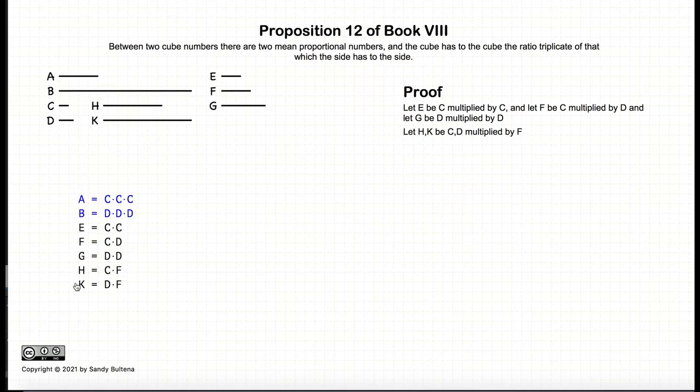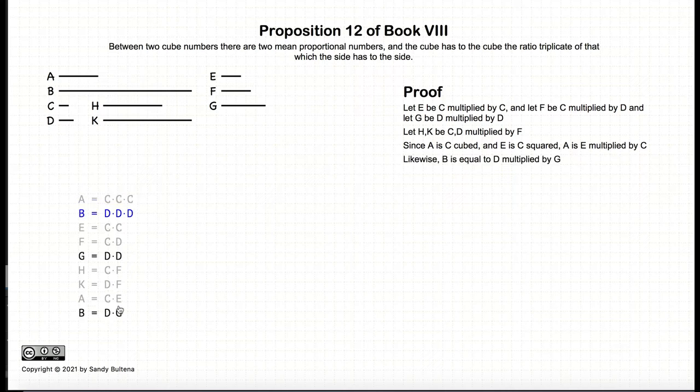So these numbers, we're just creating them. And now, since a is c times c times c, and e is equal to c times c, that means that a is equal to c times e. Likewise, b is equal to d times g.